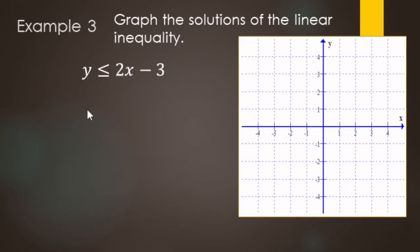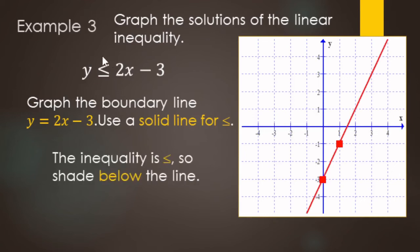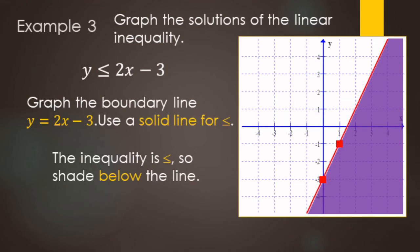Another example: we're going to graph y is less than or equal to 2x minus 3. We start by graphing our boundary line. Since it's or equal to, we use a solid line. This is in slope-intercept form, so negative 3 is the y-intercept and the slope is 2 — up 2 over 1. Since it's less than or equal to, we shade below the line. All those coordinates in the shaded region are solutions to y is less than or equal to 2x minus 3.